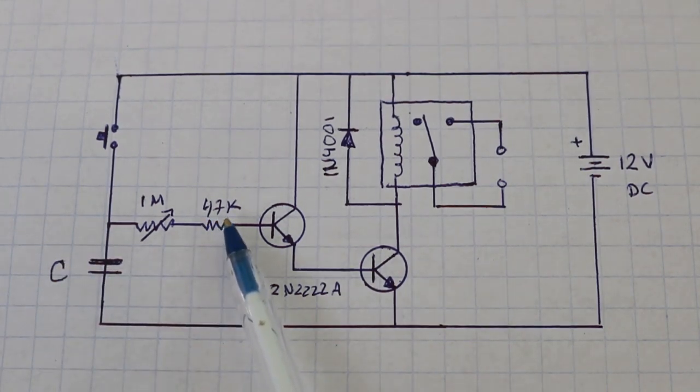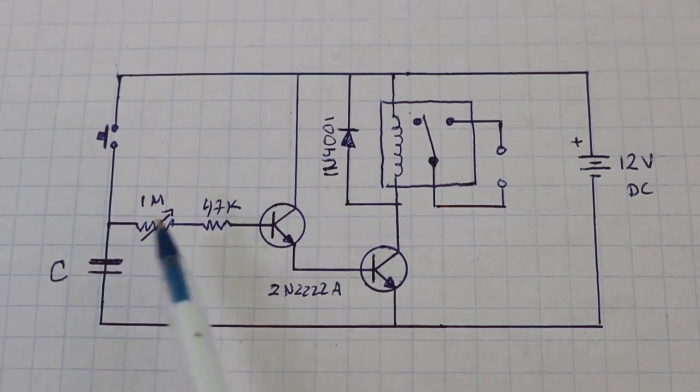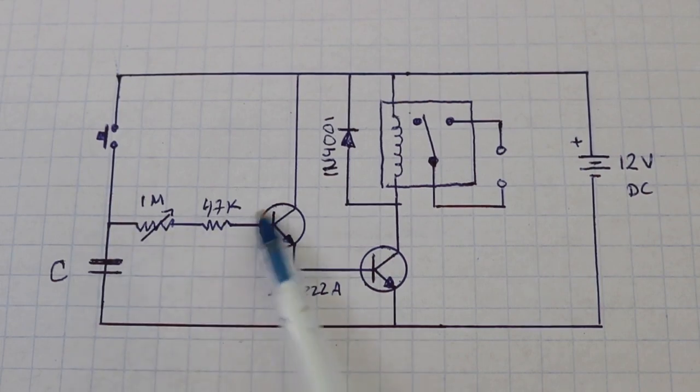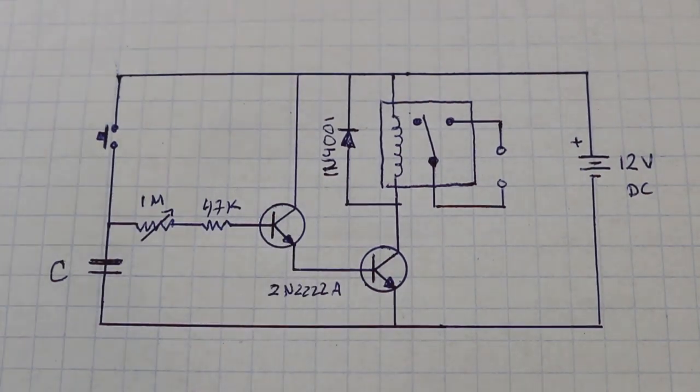Now, why we have this resistor here? It is simple. Without this resistor, when we put the potentiometer at zero ohms, a large current will flow to the base of this transistor and it can burn.